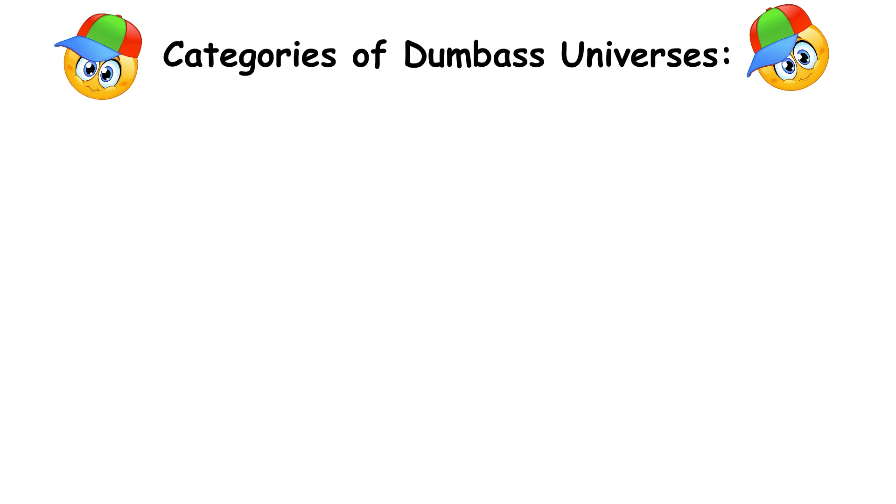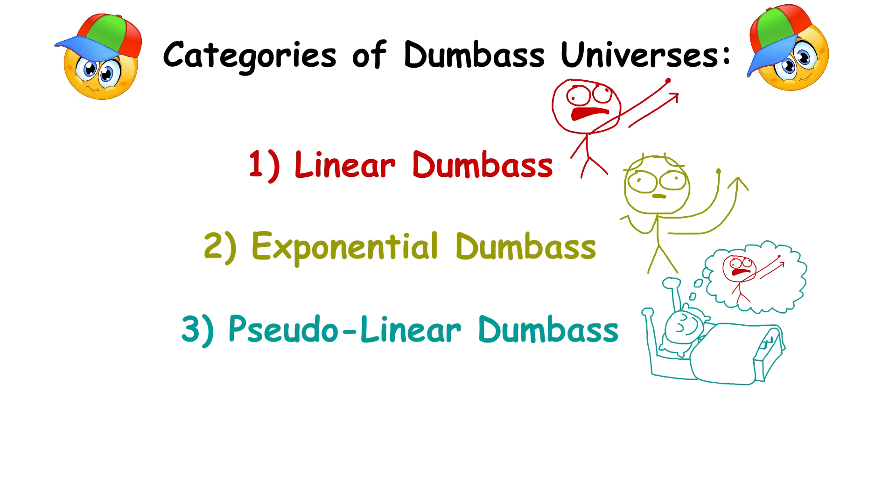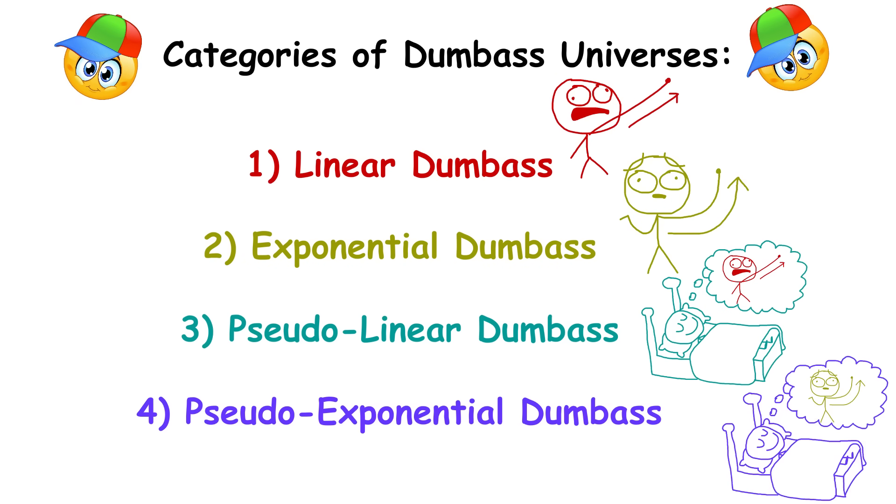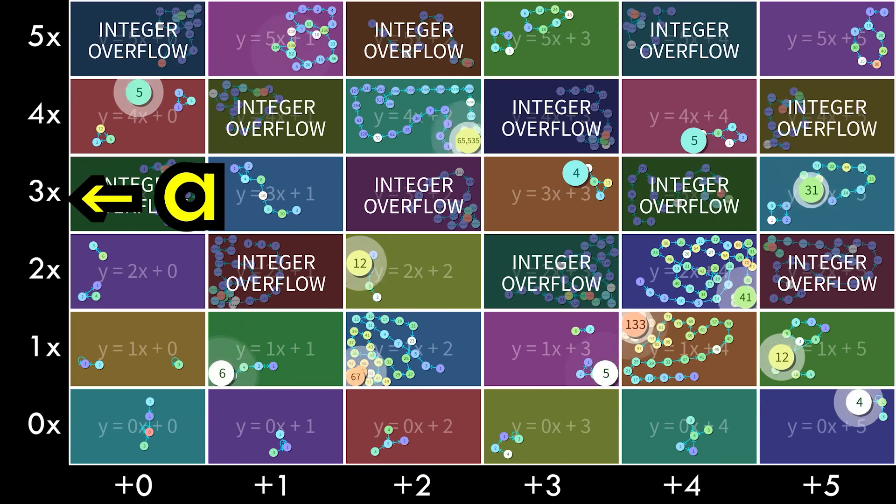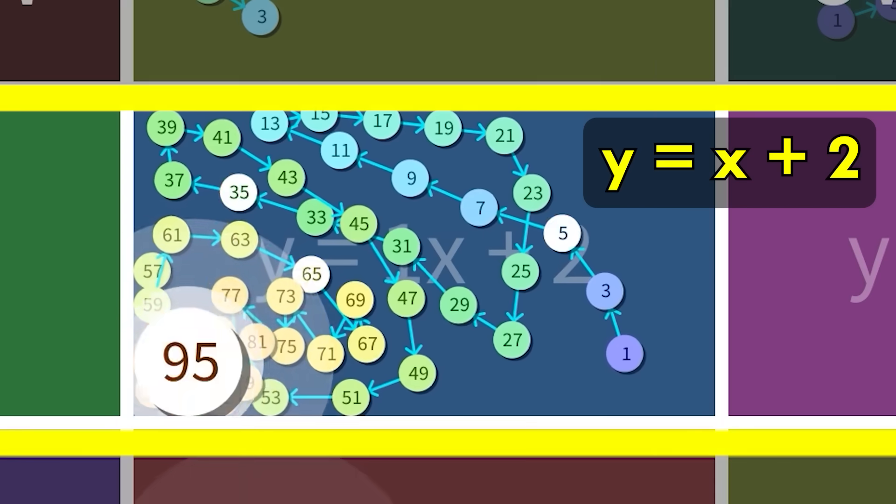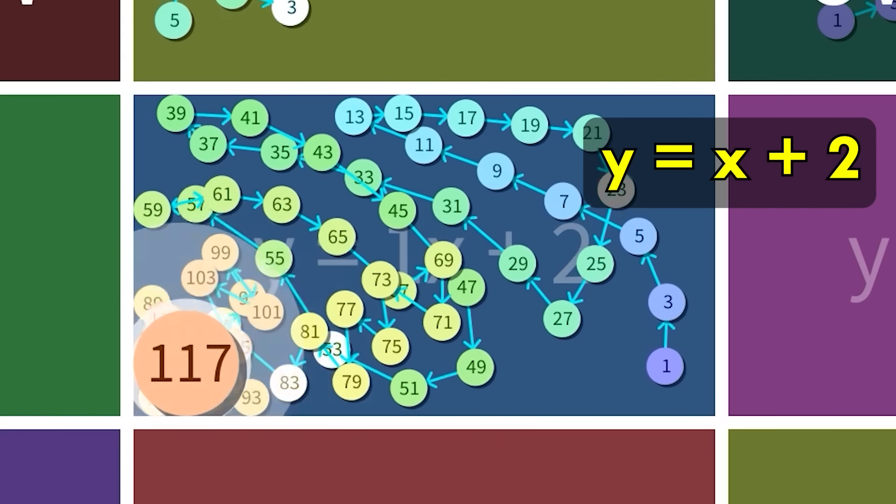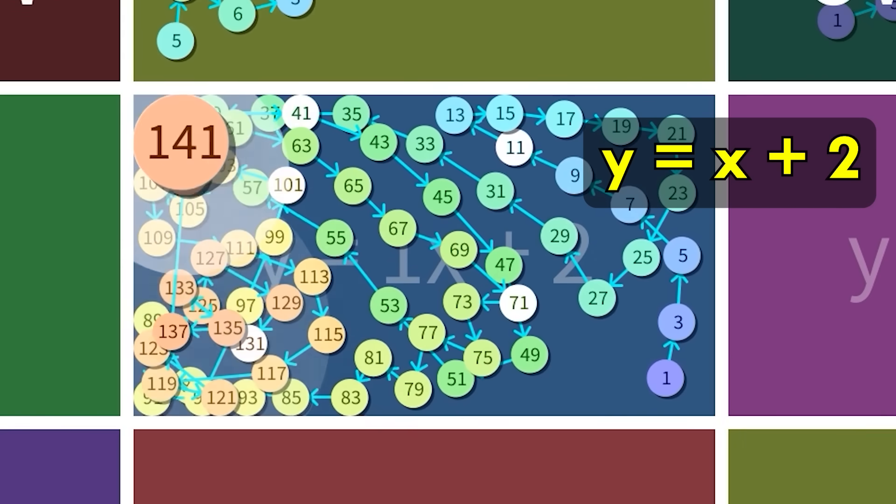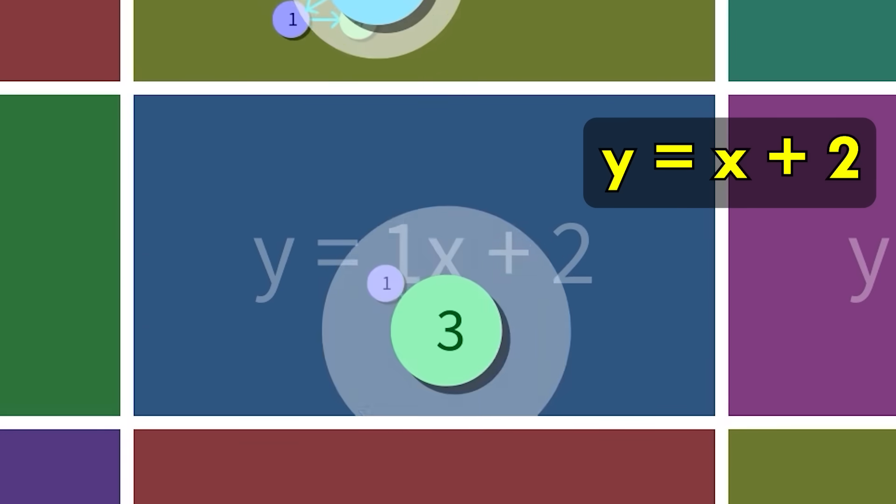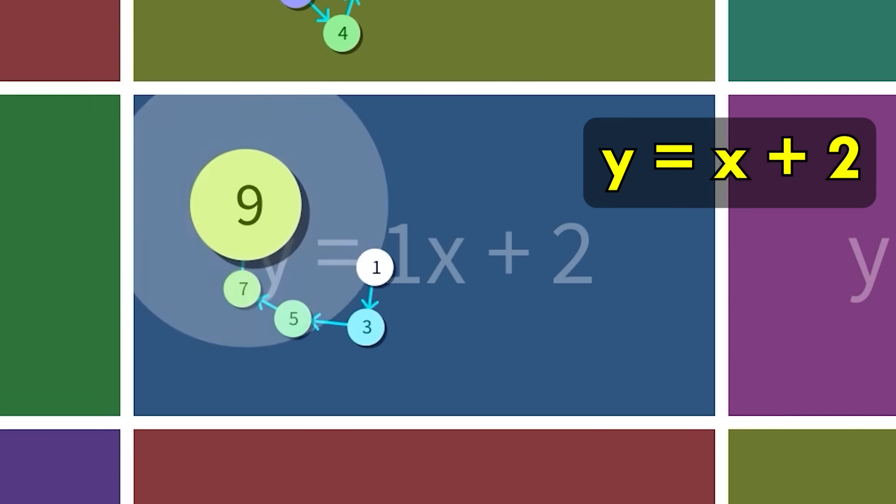There's actually 4 subcategories, linear dumbass, exponential dumbass, pseudo-linear dumbass, and pseudo-exponential dumbass. If the scaling factor a is 1, then we have something like y equals x plus 2, where odd numbers just point to the next odd number two units up. 1, 3, 5, 7, you get the point.